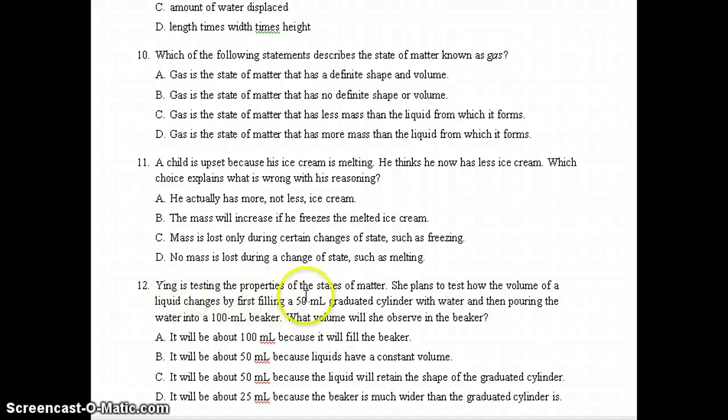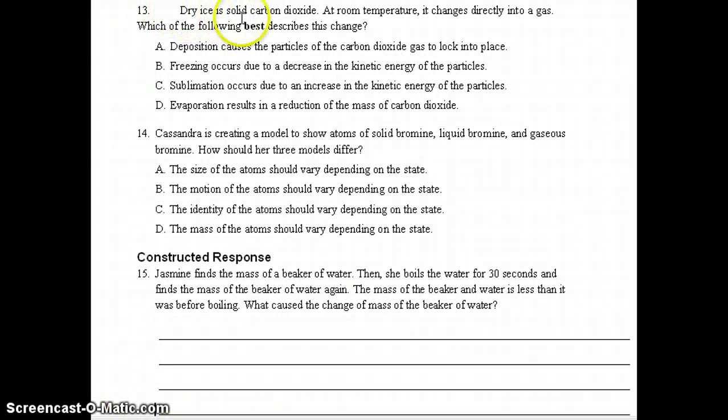Number 12, Ying is testing the properties of the states of matter. She plans to test how the volume of a liquid changes by first filling a 50 milliliter graduated cylinder with water and then pouring the water into a 100 milliliter beaker. What volume will she observe in the beaker? The correct answer should be, once again, B. It will be about 50 milliliters because liquids have a constant volume. Number 13, dry ice is solid carbon dioxide. At room temperature, it changes directly into a gas. Which of the following best describes this change? The correct answer should be C, sublimation occurs due to an increase in the kinetic energy of the particles. It goes directly from a solid to a gas, so it would be sublimation.